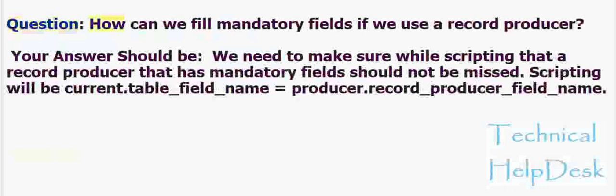Question: How can we fill mandatory fields if we use a record producer? We need to make sure while scripting that a record producer that has mandatory fields should not be missed. The scripting syntax will be: current.table_field_name = producer.record_producer_field_name.